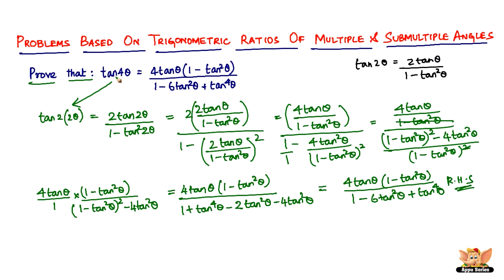We've started off with just tan(4θ) and reached the right-hand side. The trick was to not see tan(4θ) as just 4θ — you have to see it as 2 times 2θ, then use the double angle formula for tan(2θ), keep going from there, and after that it's simple mathematics. Remembering the formula gets you halfway through the problem; after that you just use basic concepts of fractions. That ends this problem — I'll see you in the next videos with more problems based on trigonometric ratios of multiple and sub-multiple angles.